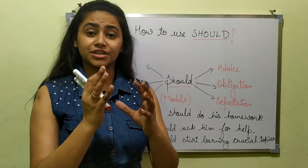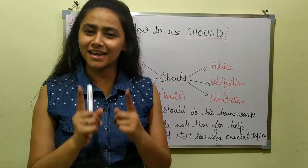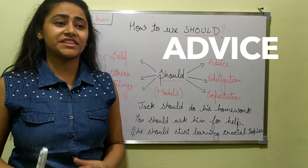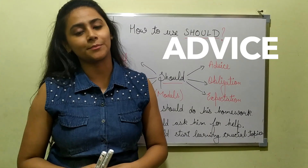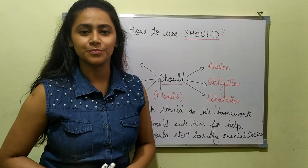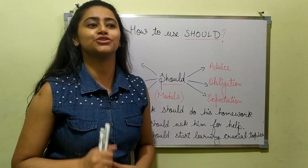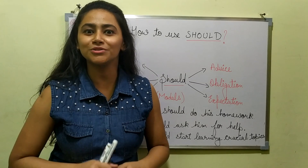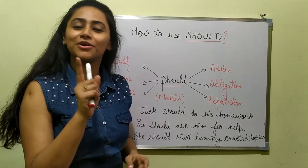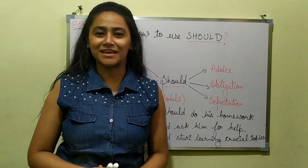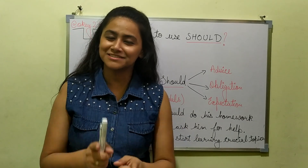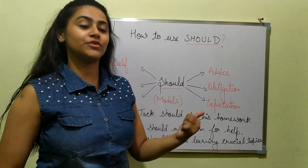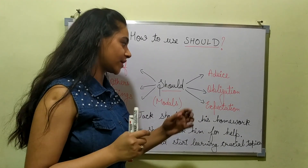There are three ways, three usages of 'should.' Let's look at them one by one. The first one is advice. Whenever you are giving advice to somebody, you use the word 'should.' For example, 'You should complete your task before teacher scores you.' There you are giving advice to your younger sibling. It's easy to give advice but difficult to follow — we know that! For advice, we use the word 'should,' which is a modal.